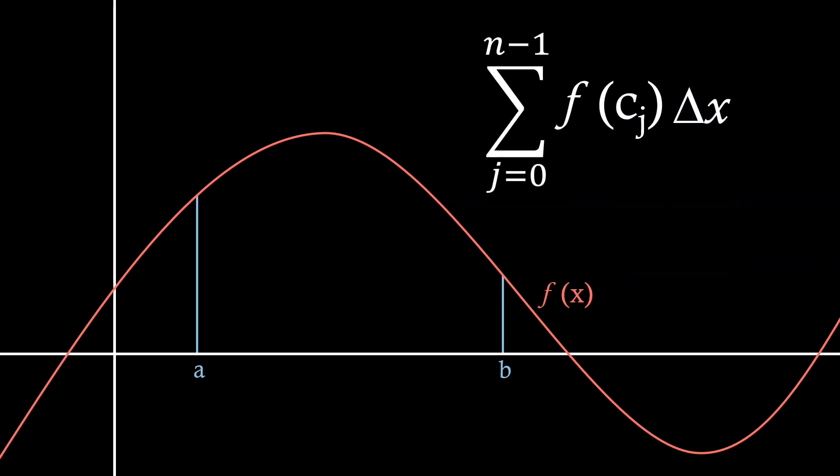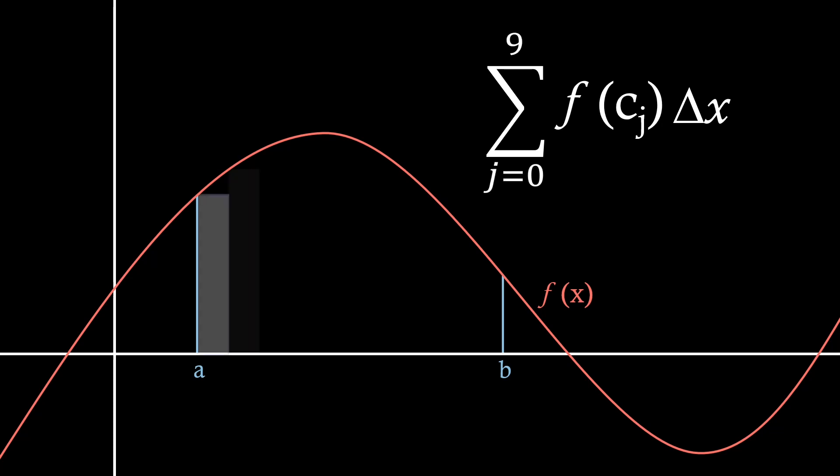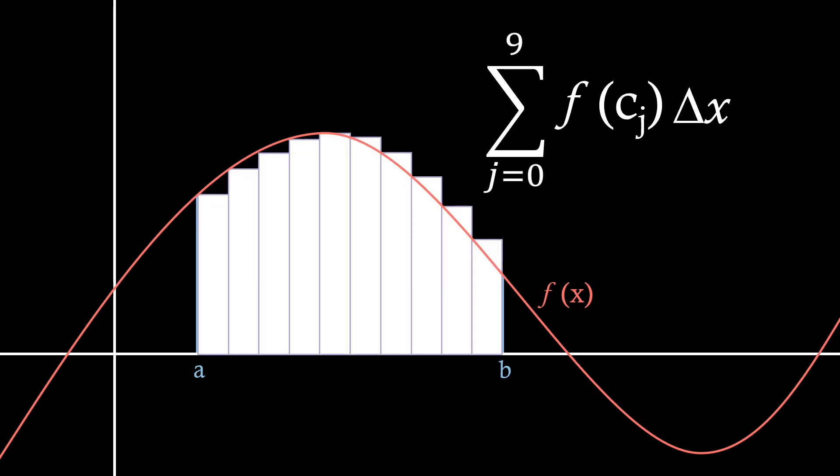Right, so what does this all mean? Let's firstly look at the case where n equals 10. This means that we'll have 10 equally spaced bars between a and b. Therefore, as we're summing the area of these individual bars, we actually get an approximation to what the area under the curve will be.